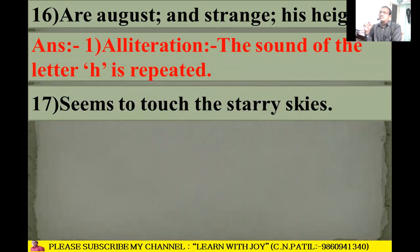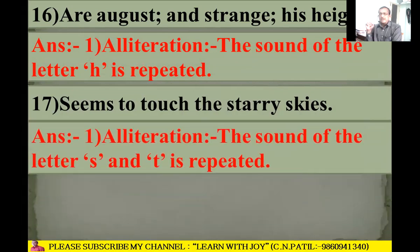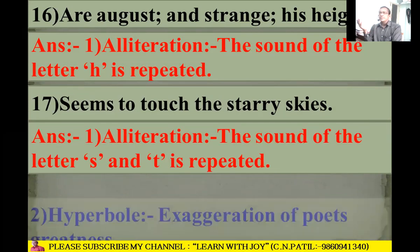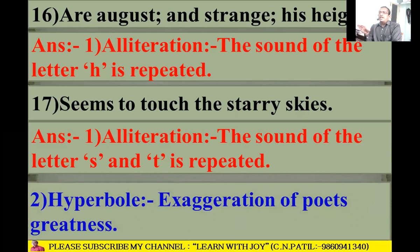Next line: 'Seems to touch the starry skies.' Alliteration is there because both 's' and 't' sounds are repeated: 's' in 'seems' and 's' in 'starry'; 't' in 'touch' and 't' in 'to.' Hyperbole is also there — exaggeration of the poet's greatness.